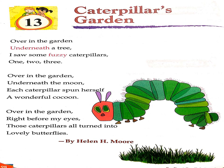We are just starting your rhyme here. 'Over in the garden, underneath a tree, I saw some fuzzy caterpillars, one, two, or three.' We are in the garden under the tree and we can see a lot of fuzzy caterpillars, one, two, or three. 'Over in the garden, underneath the moon, each caterpillar spun herself a wonderful cocoon.'